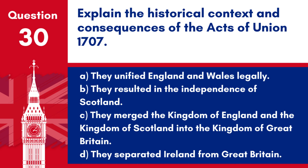Question 30. Explain the historical context and consequences of the Acts of Union 1707. a. They unified England and Wales legally. b. They resulted in the independence of Scotland. c. They merged the Kingdom of England and the Kingdom of Scotland into the Kingdom of Great Britain. d. They separated Ireland from Great Britain. Answer: c. The Acts of Union 1707 were significant for merging England and Scotland into a single sovereign state, the Kingdom of Great Britain, impacting the political landscape of the British Isles.